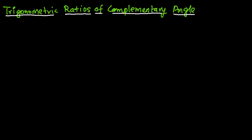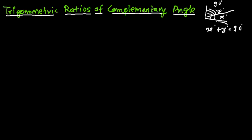In this video we are going to learn the trigonometric ratios of complementary angles. First we should know what complementary angles are. Suppose this is a right angle of 90 degrees, divided into two parts: x degrees and y degrees. The sum of x and y is 90 degrees. Such angles whose sum equals 90 degrees are known as complementary angles — y is the complementary angle of x, and x is the complementary angle of y.